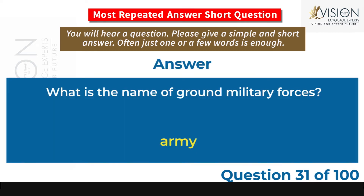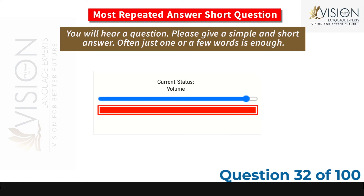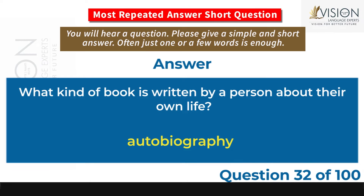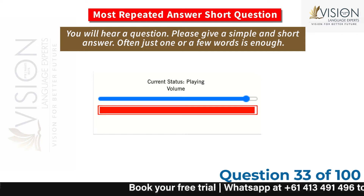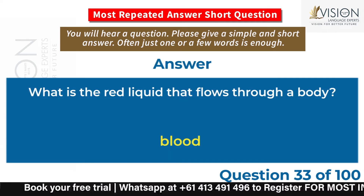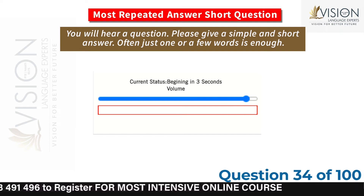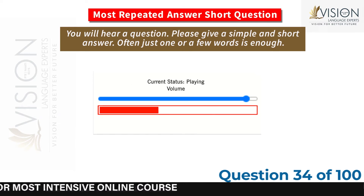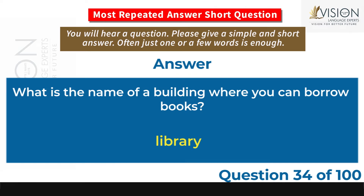What kind of book is written by a person about their own life? Autobiography. What is the red liquid that flows through a body? Blood. What is the name of a building where you can borrow books? Library.